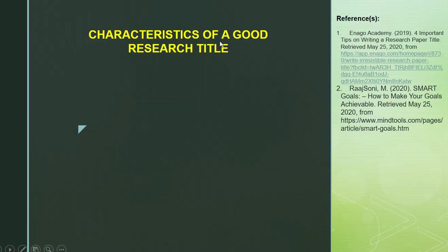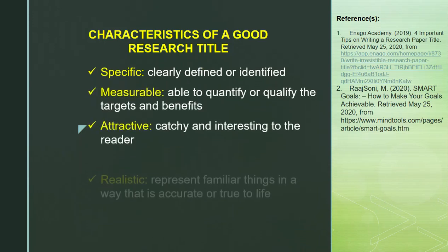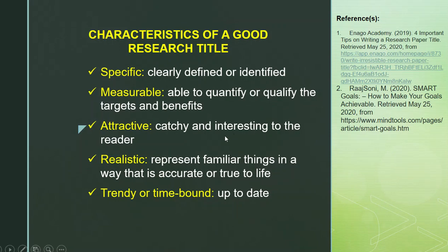Let us discuss the characteristics of a good research title. A good research title is Specific, Measurable, Attractive, Realistic, and Trendy or time-bound — for short, it is SMART. It should be clearly defined or identified, able to quantify or qualify targets and benefits, catchy and interesting to the reader, represent familiar things accurately and true to life, and be up-to-date.